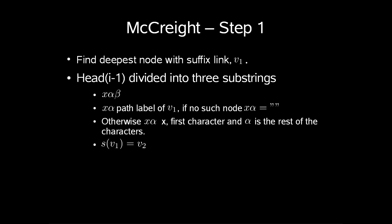To go into more details, the first step where we find the deepest node with a suffix link, let's call this v_1. Head(i-1) can then be divided into three substrings: x alpha beta. x alpha is the path label of the node v_1. If no such node is found, x alpha is the empty string. Otherwise x is the first character and alpha is the rest of the characters. If we follow the suffix link v_1, we get to node v_2, whose label is alpha.